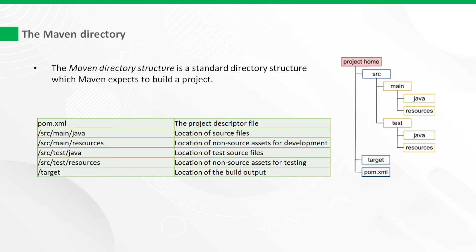The Maven directory. The Maven directory structure is a standard folder structure which Maven expects to build a project. You do not have to follow the Maven directory structure, but it is much easier if you do, and it also makes it easier for other developers to understand your project directory structure. The POM.xml is the project descriptor file, which we have already discussed.